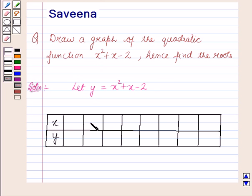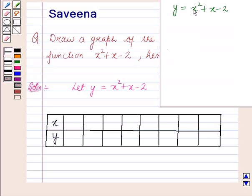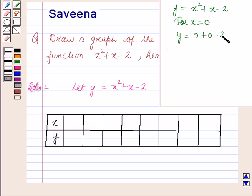Let us form a set of pairs of values for x and y, and for this we have made a table. We have taken y is equal to x squared plus x minus 2. For x is equal to 0, y is equal to 0 plus 0 minus 2, that is equal to minus 2. So for x equals 0, y equals minus 2.